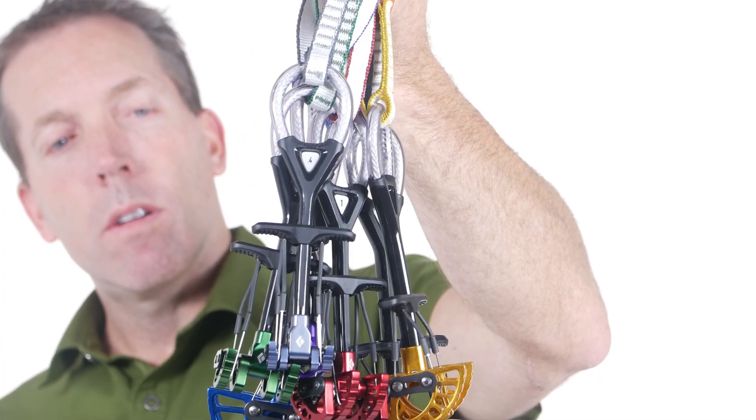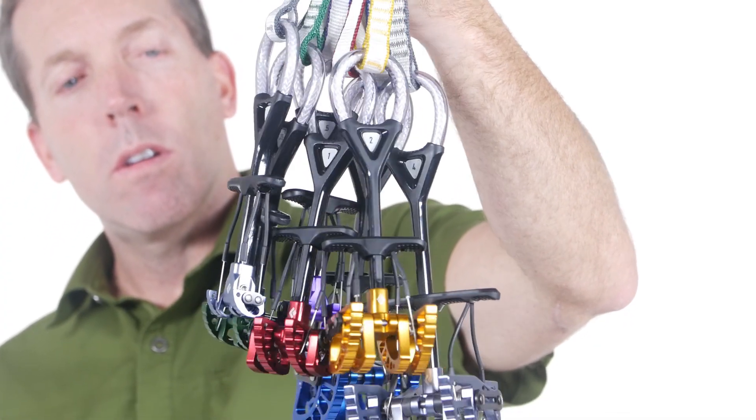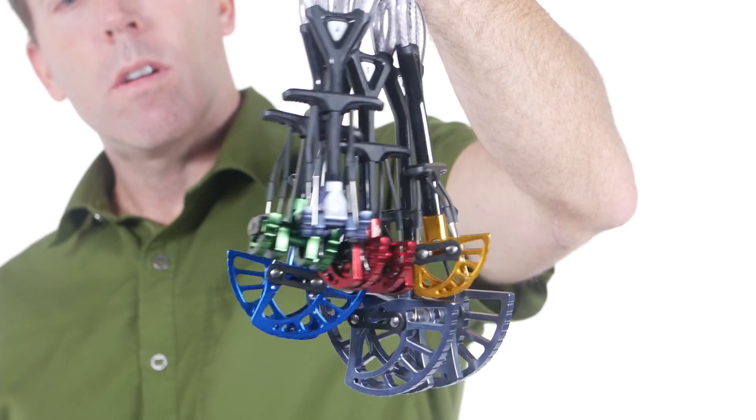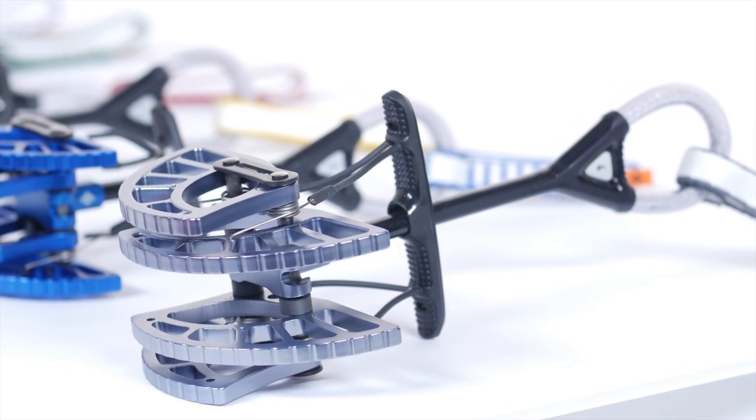All of this makes a rack of the new Camelot Ultralights 239 grams lighter than the equivalent originals, which means you can move faster while carrying a lighter load.